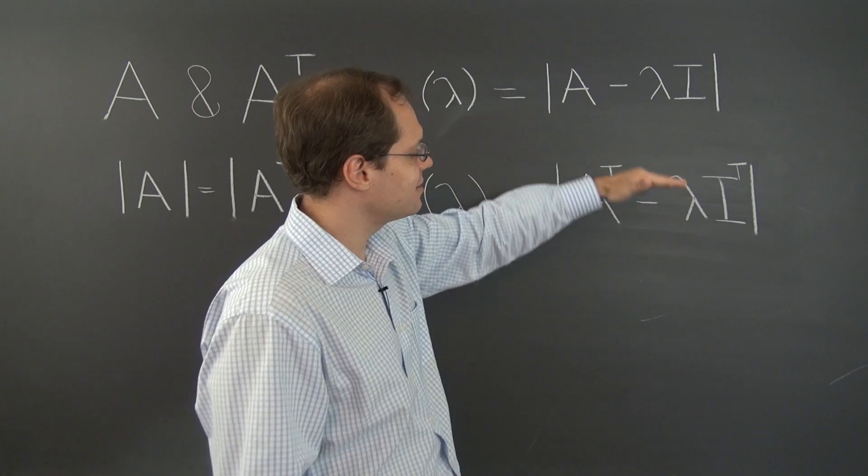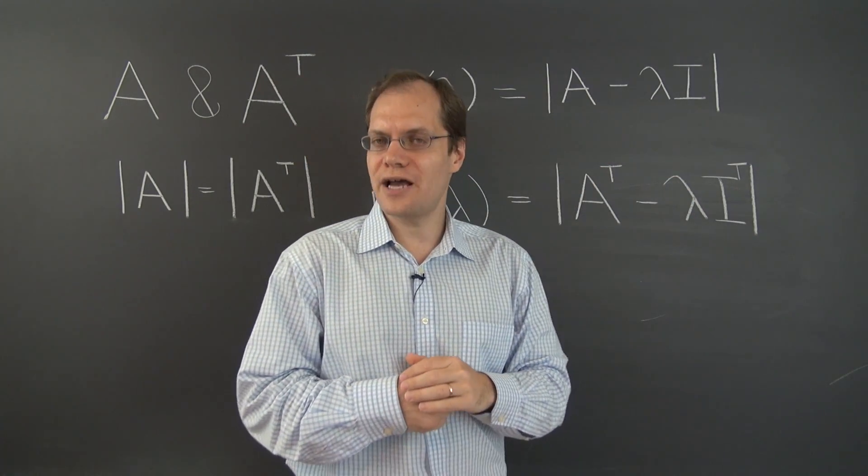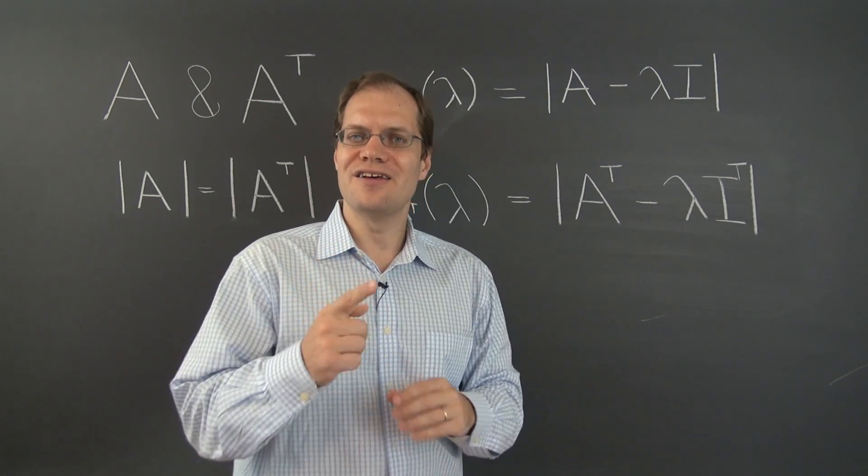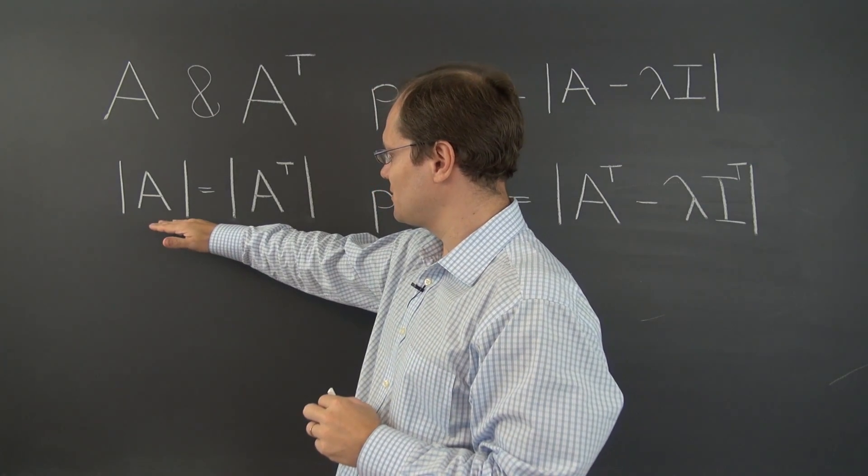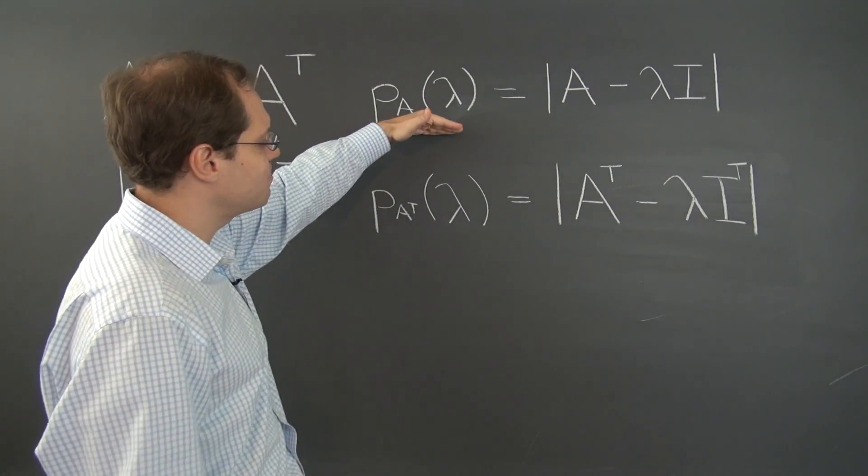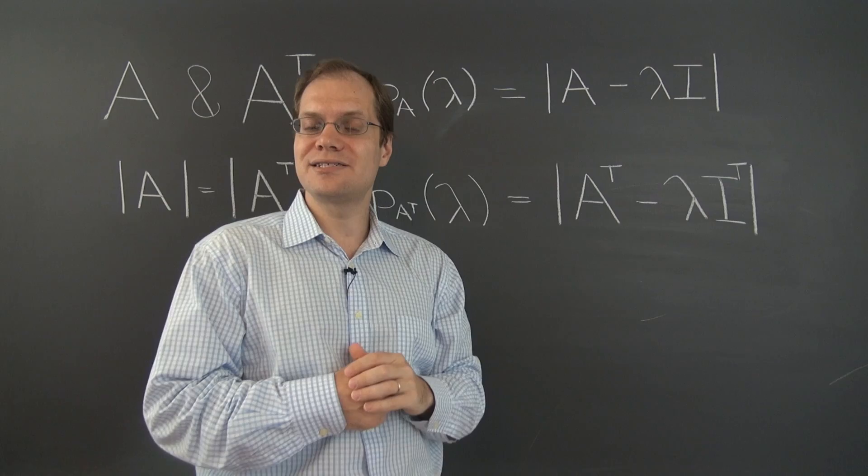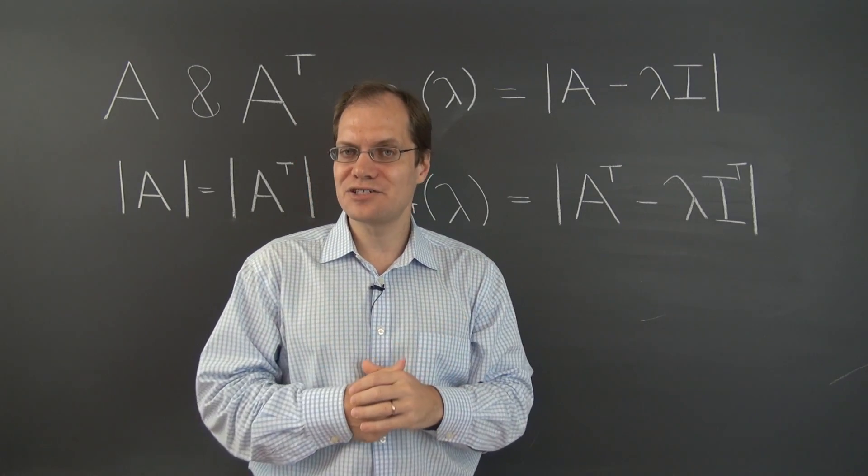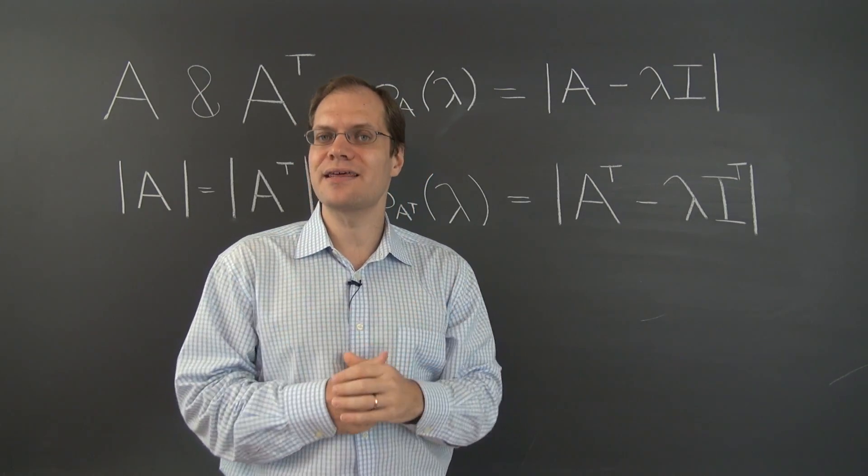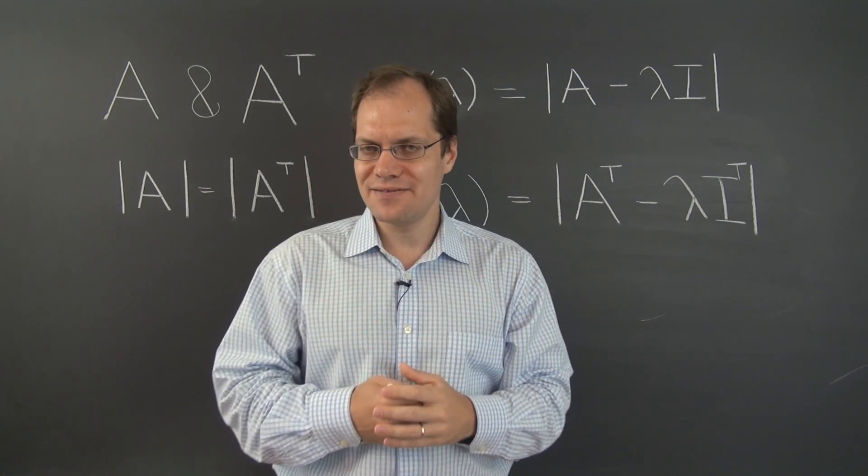So we can replace I with I transpose for free. And now you see algebraically that the two matrices within the determinant symbol are the transposes of each other. Therefore, their determinants are equal. And we conclude that the characteristic polynomials for A and A transpose are actually the same. And if they have identical characteristic polynomials and identical characteristic equations, then they have identical eigenvalues.